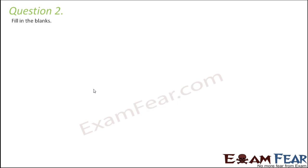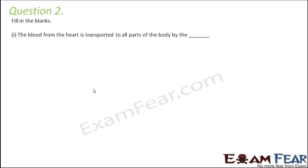Question number 2: Fill in the blanks. Blood from the heart is transported to all parts of the body. Which are the blood vessels which carry blood from heart to other body parts? Arteries. And which are those blood vessels which do exactly the opposite? They are veins. Veins carry blood from different body parts to the heart.